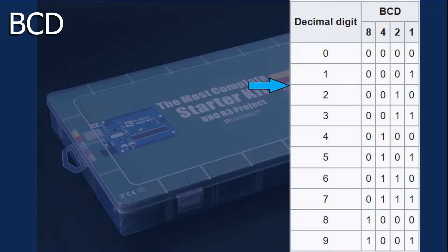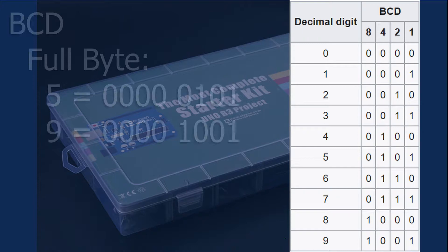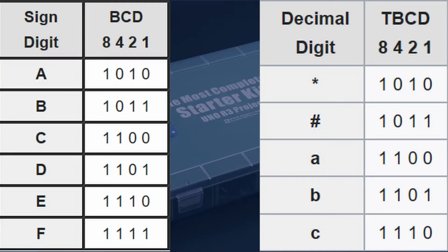Simply put, the binary coded decimal or BCD format is a method of storing decimal numbers where each decimal digit is represented in either a byte or nibble. In some cases, other bit patterns can be used for signs, symbols, or letters.